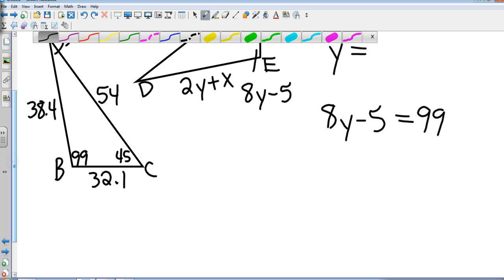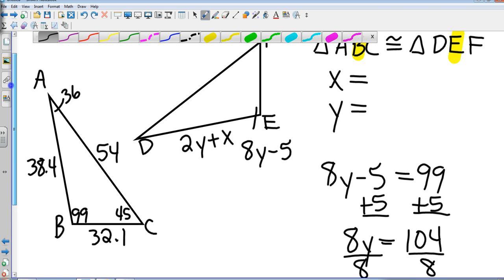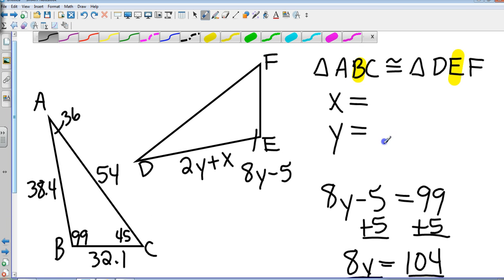So a little multi-step Algebra 1 here. Add 5 to both sides, so we get 8Y equals 104. Divide both sides by 8, and Y equals 13. So I go back up here, and Y is 13.